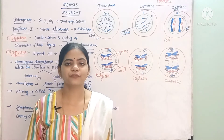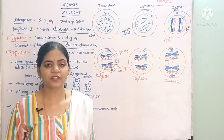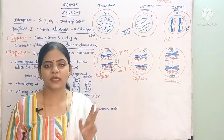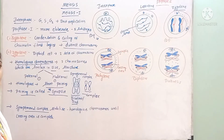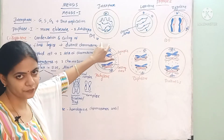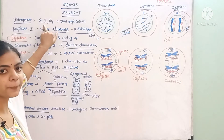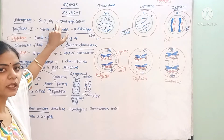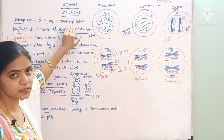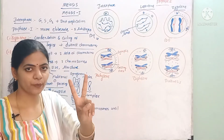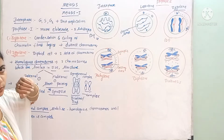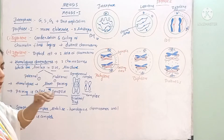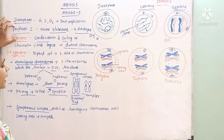Hello everyone, this is Lada Akula. In this video we are going to start Meiosis 1. In the last video we studied that meiosis has two sequential cycles: Meiosis 1 and Meiosis 2. Before entering into Meiosis 1, the cell is in interphase, where the cell completes G1, S and G2 phase, and DNA replication also completes. Only one cycle of DNA replication occurs here; in the next Meiosis 2, there is no DNA replication. After completing interphase, the cell enters into Meiosis 1, and the first stage is Prophase 1.